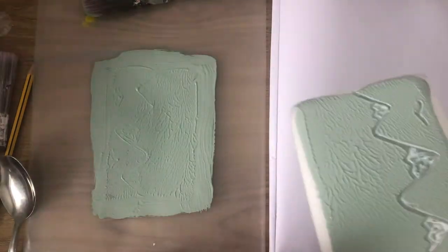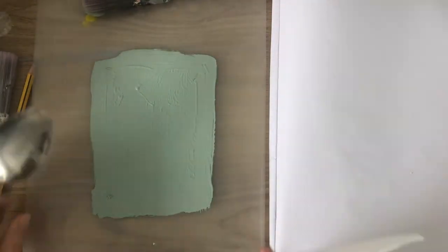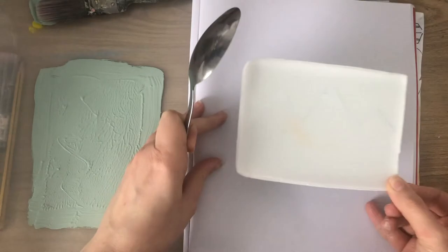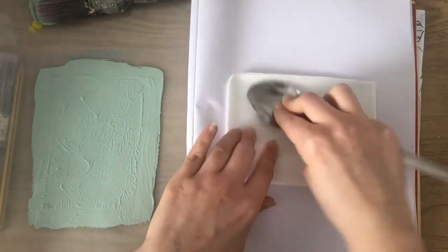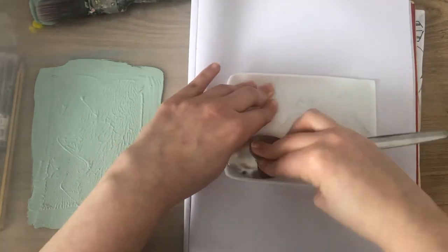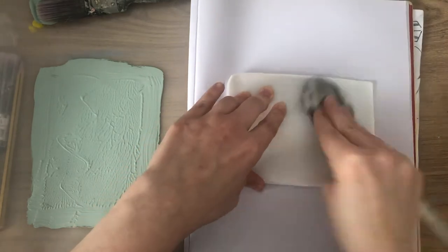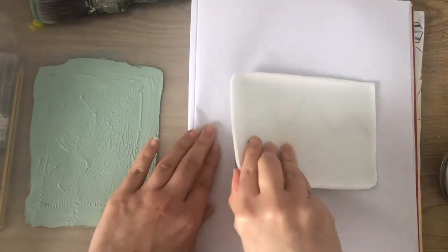I'm using the back of a spoon to make sure it gets into all of the areas and I'm turning it over onto my paper. Using the spoon again to make sure we get enough pressure, it makes a really clear print.